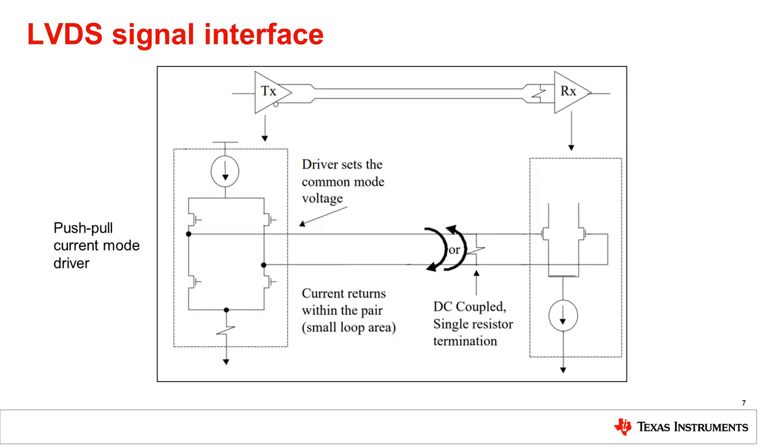Now let's take a deeper look into the inner workings of LVDS. The driver has a 3.5 milliamp push-pull mode current source, and each line in the differential pair carries the 3.5 milliamps in opposite directions. The output driver sets the common mode voltage for the DC signals, and the receiver input is very high impedance. So virtually all the current flows through the 100 ohm termination resistor.